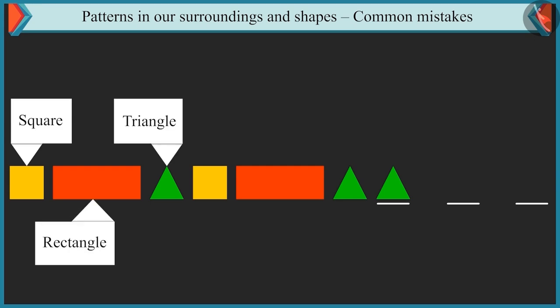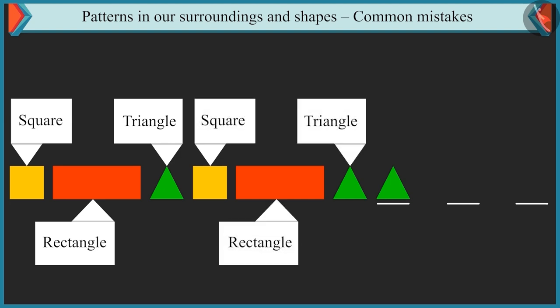rectangle and triangle. These three shapes are repeated in one order in this pattern. Yes, first shape is square, second is rectangle and third is triangle.